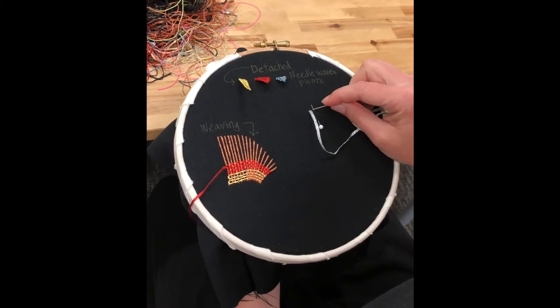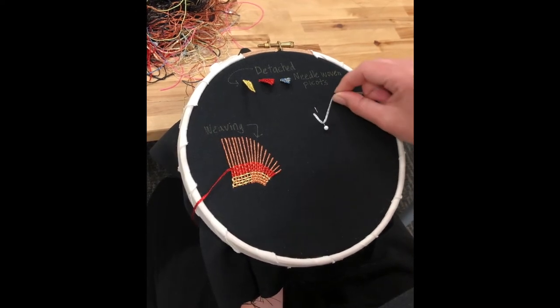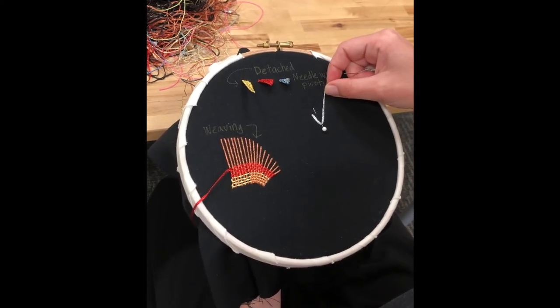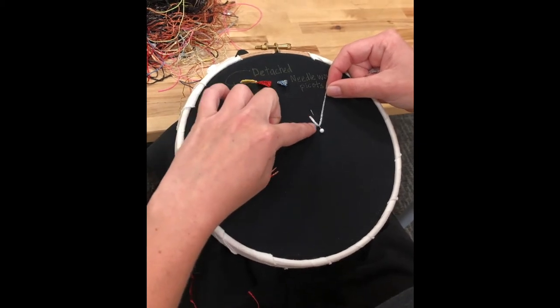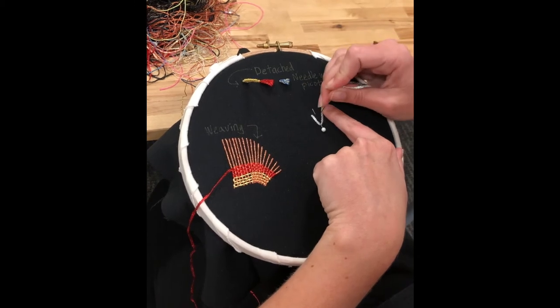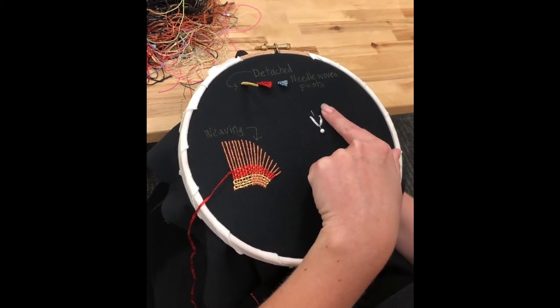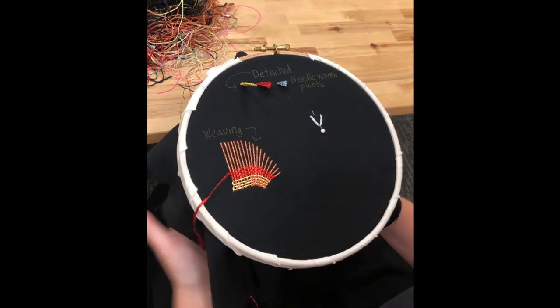So I'm going to come up just to the left of where my needle is coming out, and then I'm going to sweep underneath the top of the pin, so you can see what I was saying about how this determines how long my picot is. And then I'm going to go down on this side here. So I'm making kind of a little bit of a triangle here.